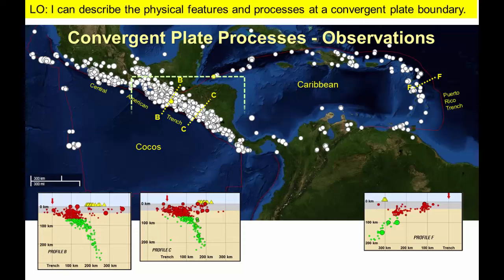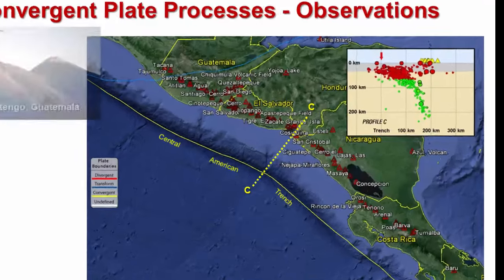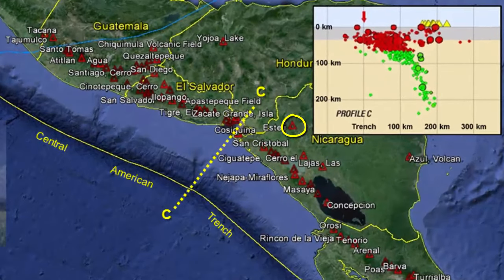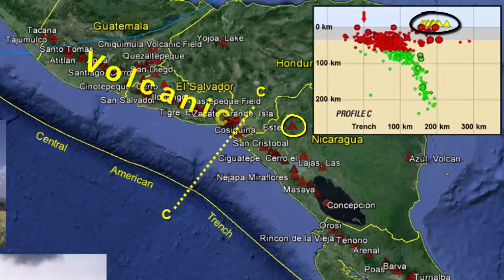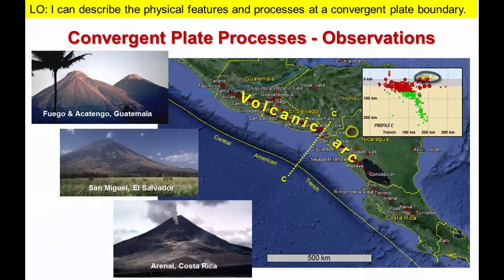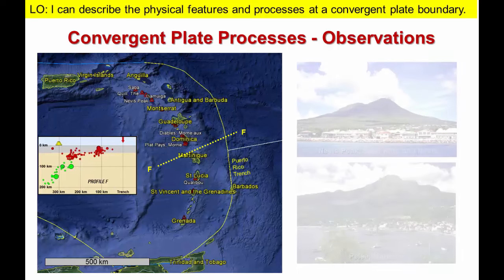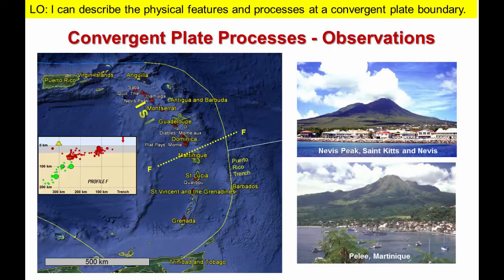Next, we're going to zoom in to these two trenches to take a closer look. We'll start in Central America. Notice the red triangles on the maps and the yellow triangles on the section — all of these triangles indicate the presence of volcanoes located approximately 200 kilometers behind the trench. The volcanoes form a line known as a volcanic arc that trends parallel to the trench. We see a similar pattern to the west of the Puerto Rico trench, but this time because the volcanoes form islands, they're known as an island arc.